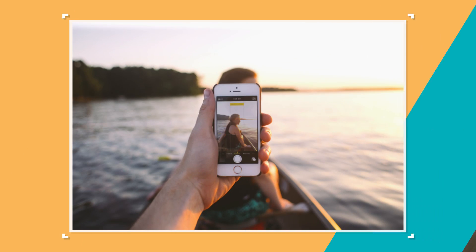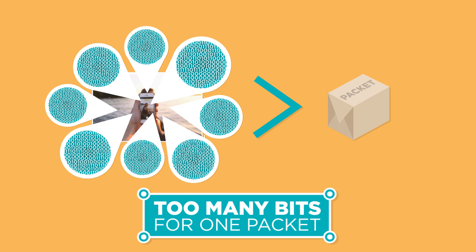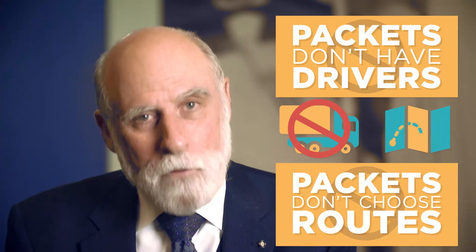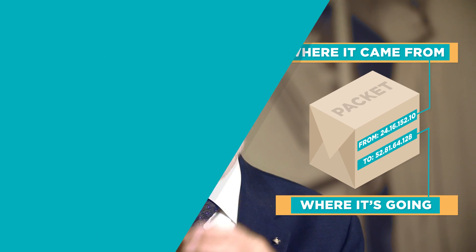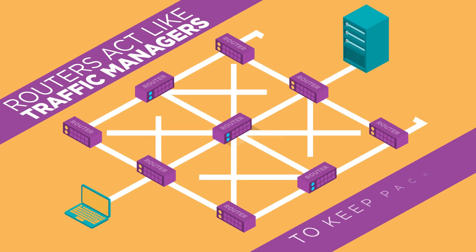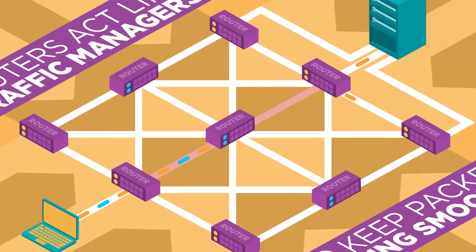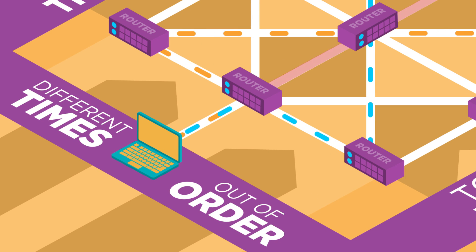If you have a very large image that you want to send to a friend or upload to a website, that image might be made up of tens of millions of bits or ones and zeros, too many to send along in one packet. Since it's data on a computer, the computer sending the image can quickly break it into hundreds or even thousands of smaller parts called packets. Unlike cars or trucks, these packets don't have drivers and they don't choose their route. Each packet has the internet address of where it came from and where it's going. Special computers on the internet called routers act like traffic managers to keep the packets moving through the networks smoothly. If one route is congested, individual packets may travel different routes through the internet and they may arrive at the destination at slightly different times or even out of order.